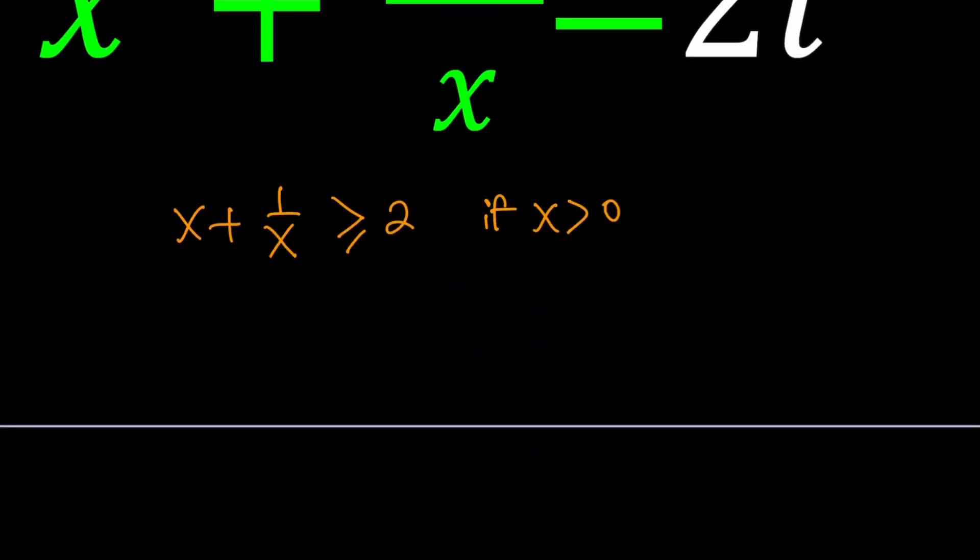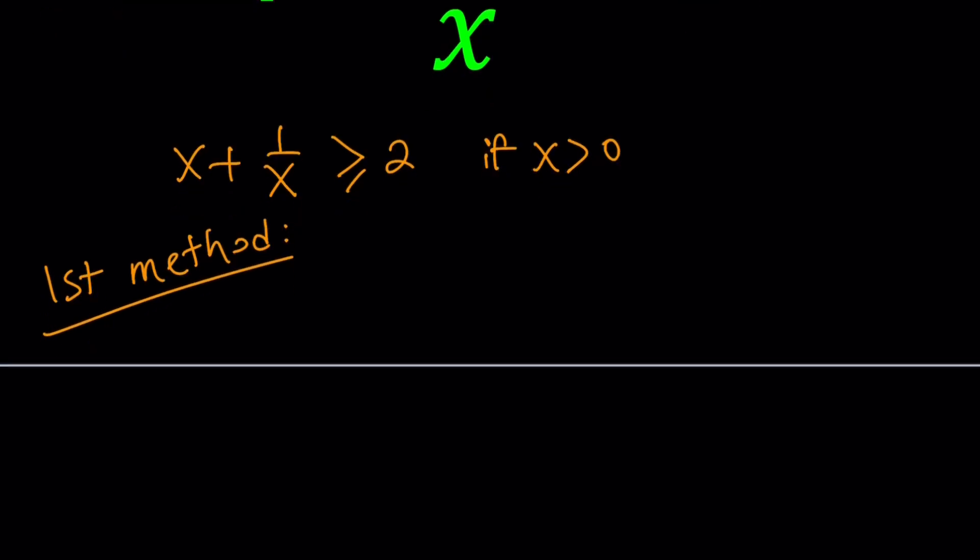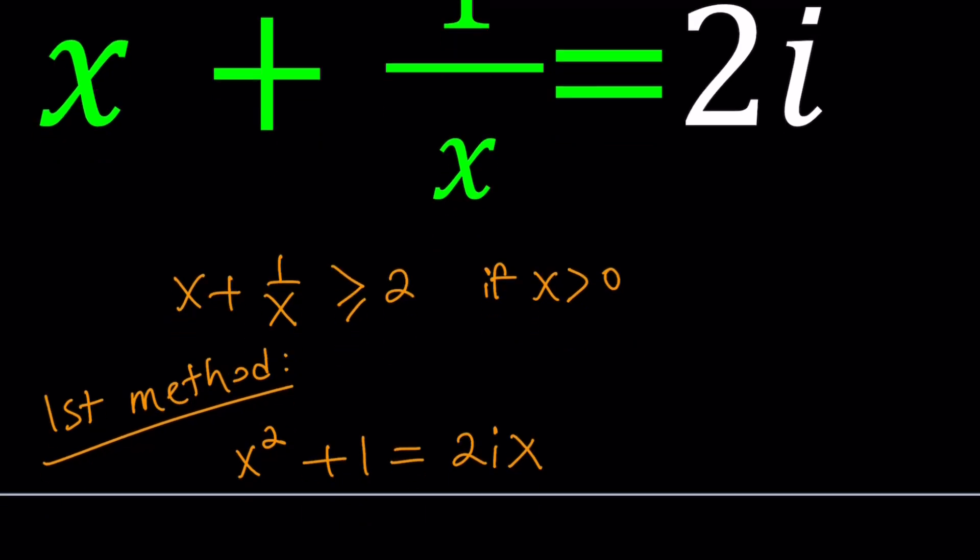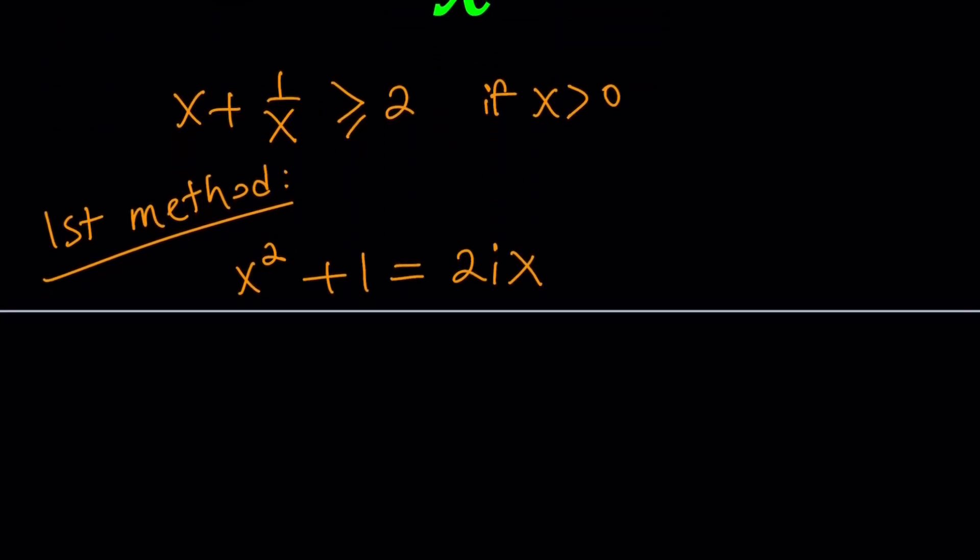Remember this part because we're going to talk about this in a little bit. But let me start with the first method. I'll be presenting two methods, by the way. For my first method, I'm just going to make a common denominator or just multiply both sides by x.